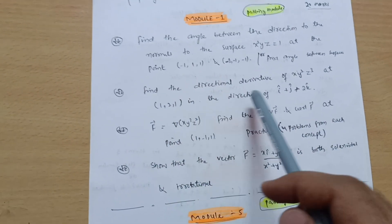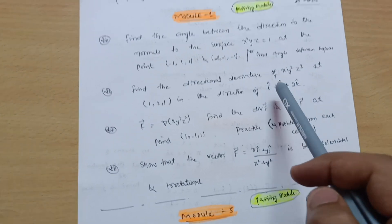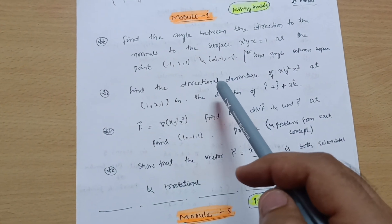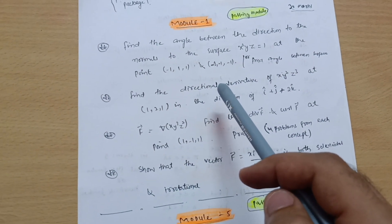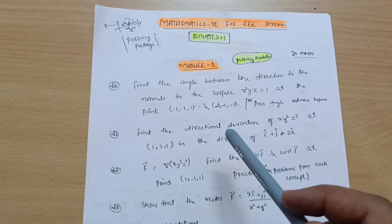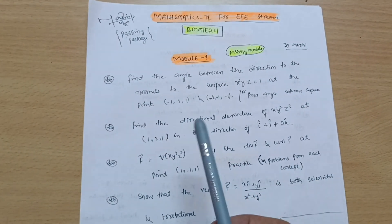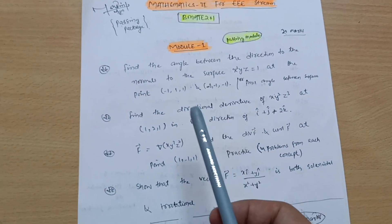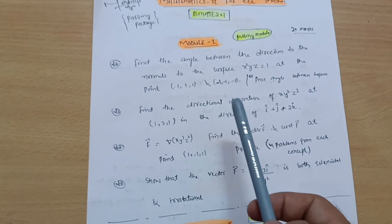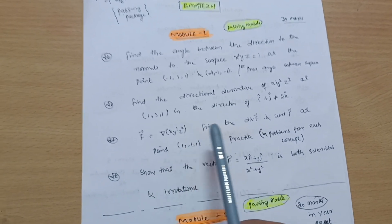The next concept is: find the directional derivative of xy²z³ at point (1, 2, 1) in the direction of i-cap + j-cap + 2k-cap. This is another easier concept — directional derivative. I have solved some problems and uploaded them on my YouTube channel, and I will provide the link in the description box.